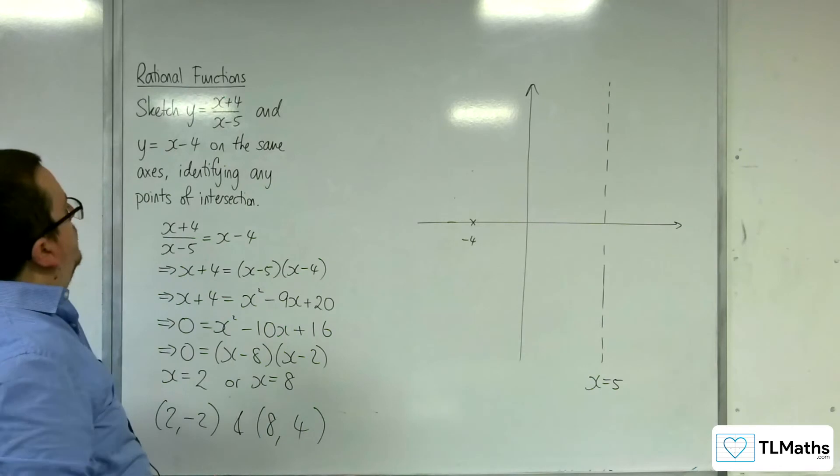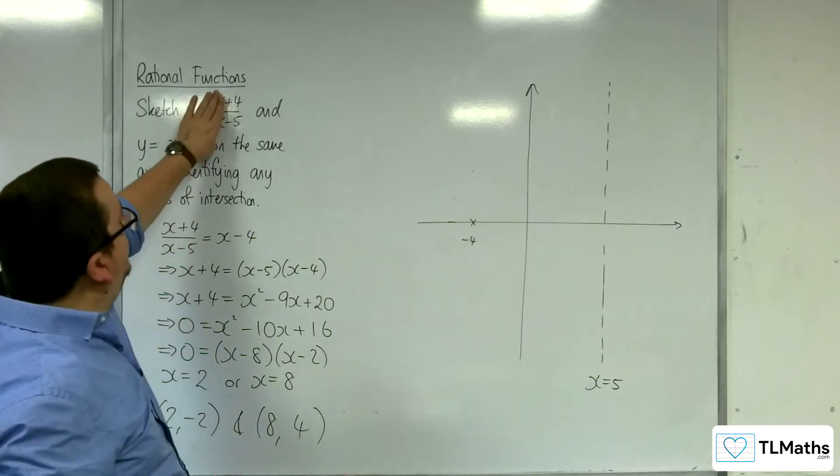Right, where is it crossing the y-axis? That's when x is 0, so at minus 4 fifths.